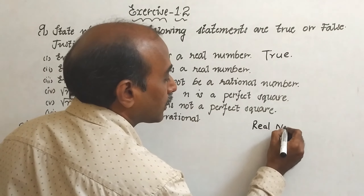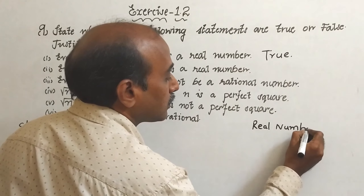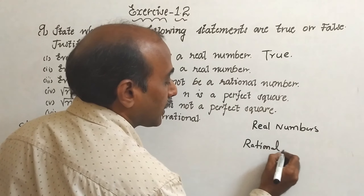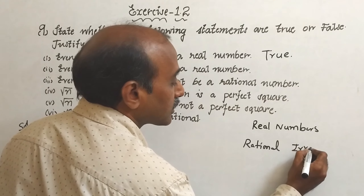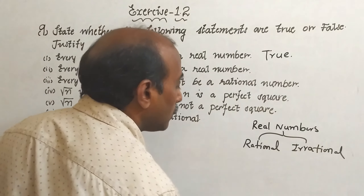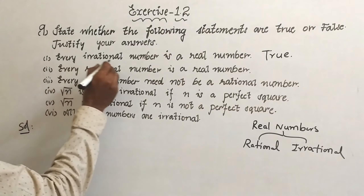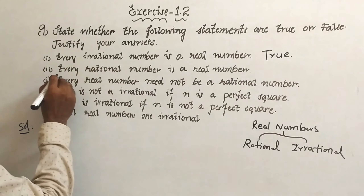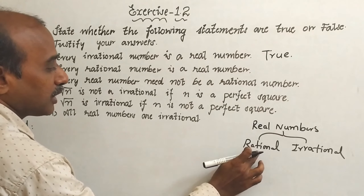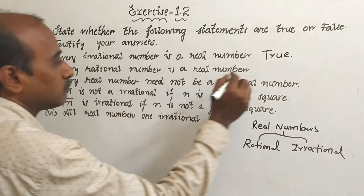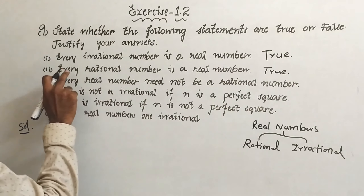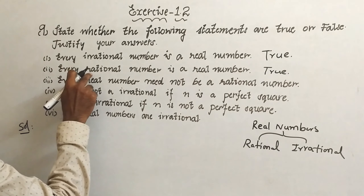You can take the real numbers — one part is rational and one part is irrational — so every irrational number is a real number: true. Second one: every rational number is a real number. This is also true.